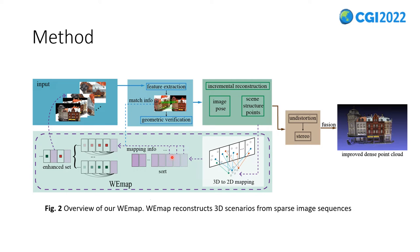Moreover, a point cloud is generated by feature matching between images rather than feature points in a single image. Therefore, we should add an image pair to the enhanced set rather than a single image. As a result, according to the feature matching information from the initial reconstruction, we add both the low contribution images and their strongest matched images to the enhanced set. Finally, we use the images in the enhanced set to replenish the weak regions in the initial point cloud and obtain a more complete point cloud structure.